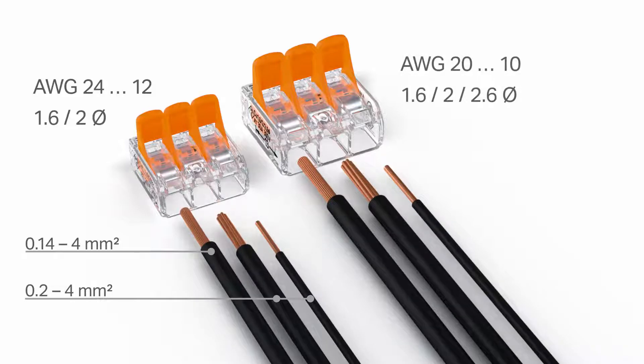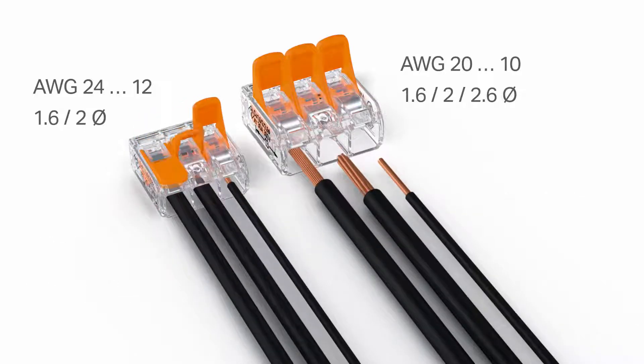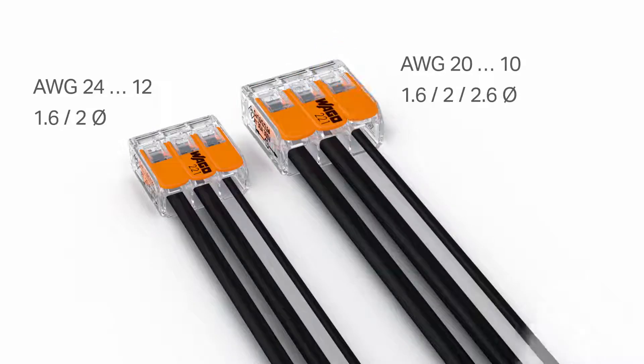The 6 square millimetre 41 amp version connects all conductor types ranging from 0.5 to 6 square millimetre. This flexibility permits a wide range of applications, especially when conductors of different types and sizes are used together.